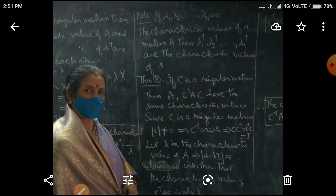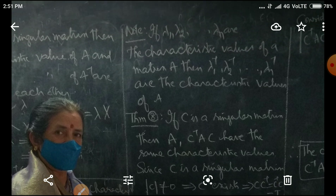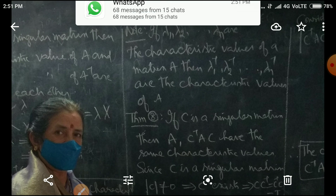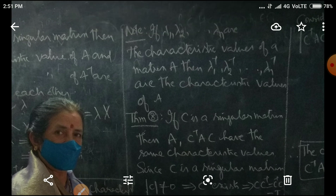Now, if lambda 1, lambda 2, etc., lambda n are the characteristic values of matrix capital A, then lambda 1 inverse, lambda 2 inverse, etc., lambda n inverse are also the characteristic values of A inverse.